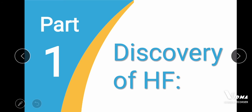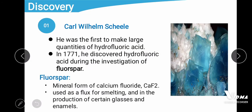Let's start with Part 1: the discovery of hydrofluoric acid. Carl Wilhelm was the first to make large quantities of hydrofluoric acid and he discovered it during the investigation of fluorospar in 1771. Fluorospar is basically the mineral form of calcium fluoride, and it is used as a flux for smelting and in the production of certain glasses. Smelting is a process of extraction of metal from its ore by heating and melting.